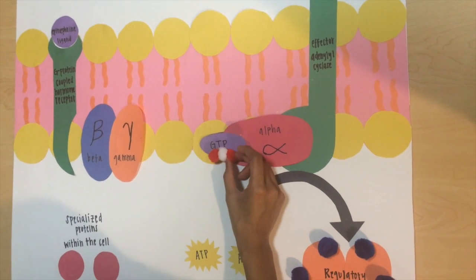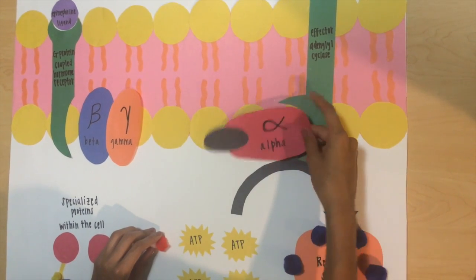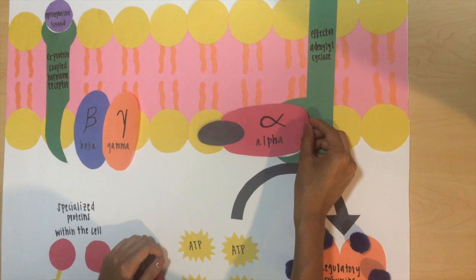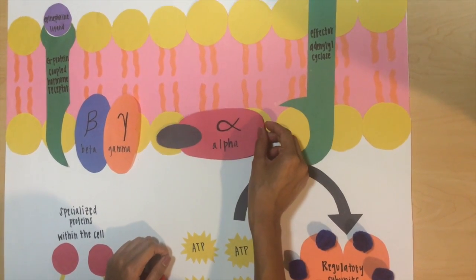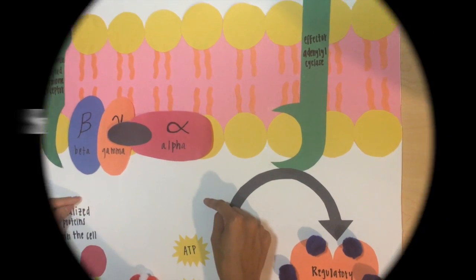GTP is hydrolyzed, forming GDP, thus inactivating the alpha subunit. Once deactivated, the alpha subunit dissociates from adenylyl cyclase and reassociates with the beta-gamma subunits of the G-protein.